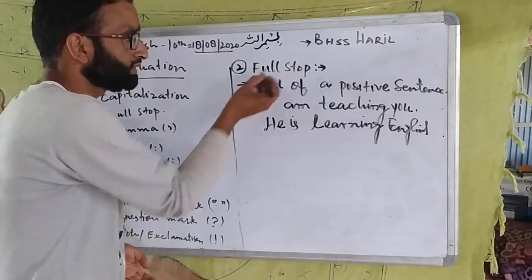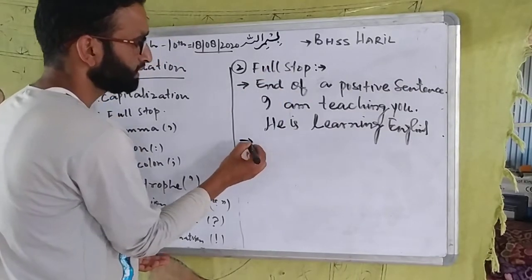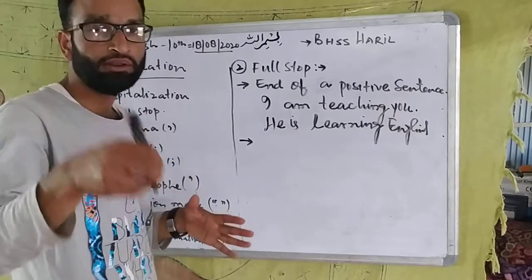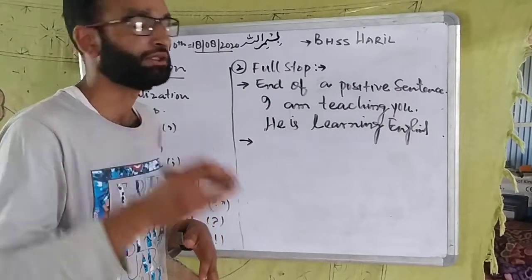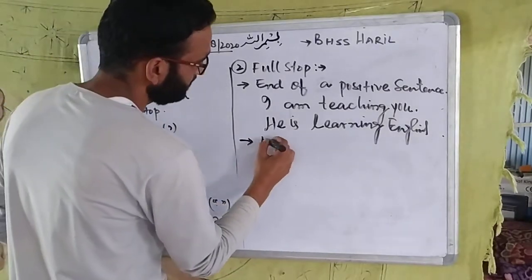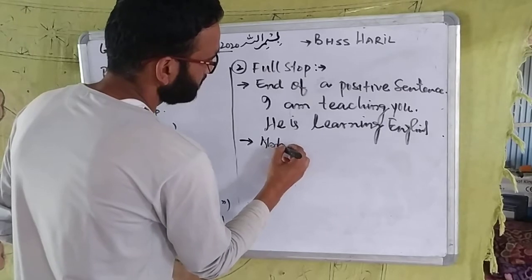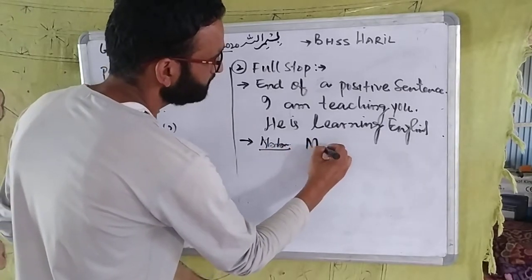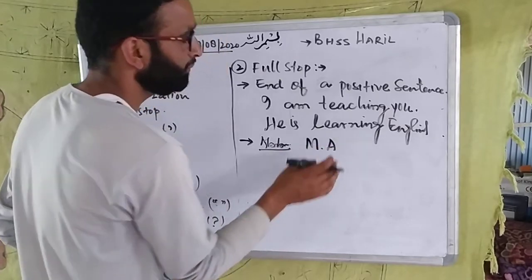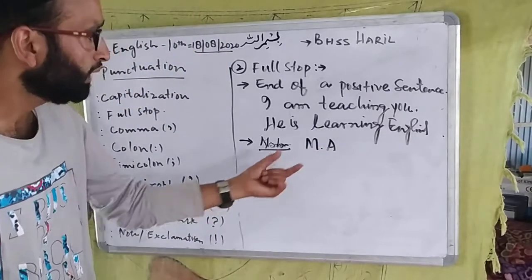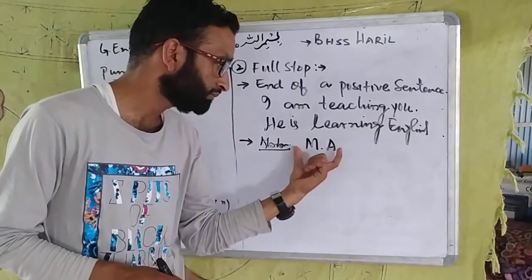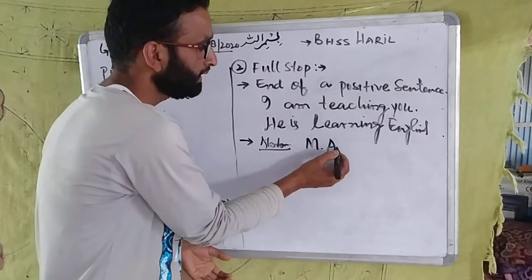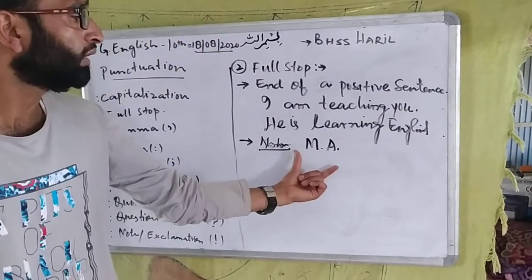This is the second use, so we have to use a full stop. The second use is abbreviation. For example, if we have an abbreviation — like we have to write MA — when we have an abbreviation, we have to use a full stop.